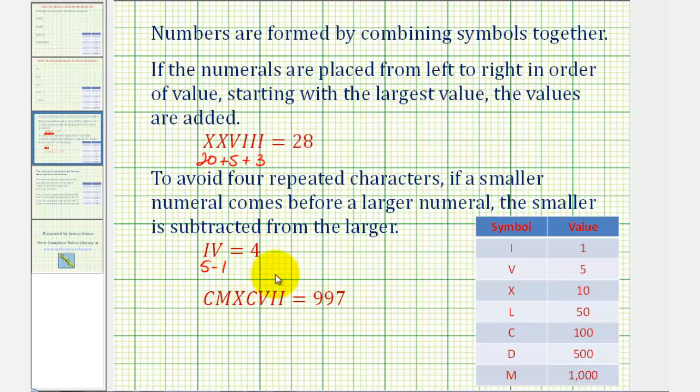For 997, notice how we have a c before an m. This is 100 before 1,000, representing 1,000 minus 100, or 900. Followed by an x before a c, or 10 before 100. 100 minus 10 is 90. Followed by five plus one plus one, or seven, for 997.